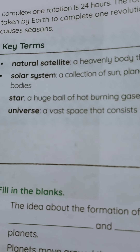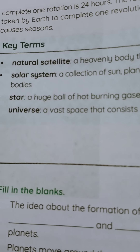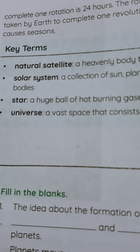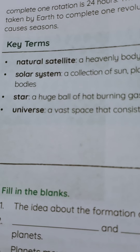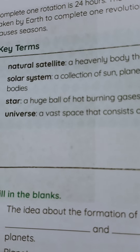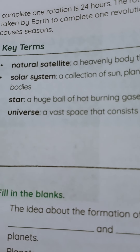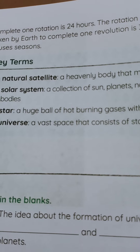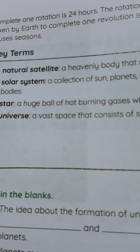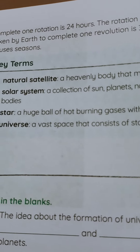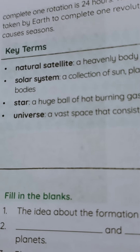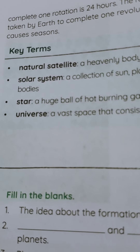Earth has 2 types of movements: rotation and revolution. When Earth completes a rotation in 24 hours, what does it create? Day and night. Earth spins in its own place, completing one rotation in 24 hours, and this causes day and night. Earth's revolution takes 365 and one-quarter days.